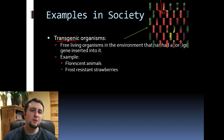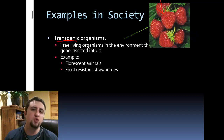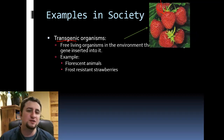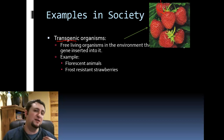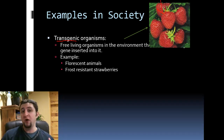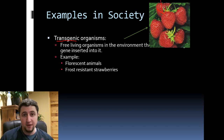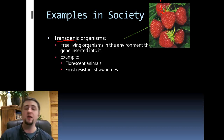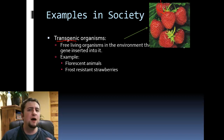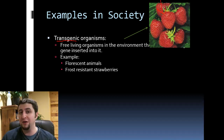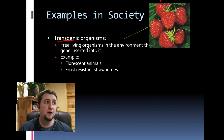Another example is strawberries that resist frost. Every year around October and November, a rough frost kills plants living on the ground. If we have strawberries that can resist frost, they'll be able to survive longer into the year, making more crops for the farmer.